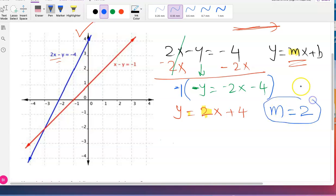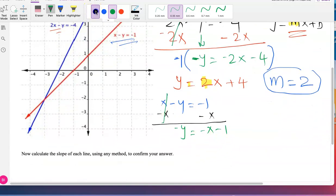Do the same thing to the red line also. So x minus y equals negative 1. Remove this x by subtracting x on both sides. Negative y equals negative x minus 1. Again you have a negative y.